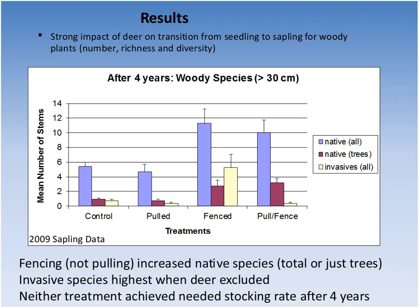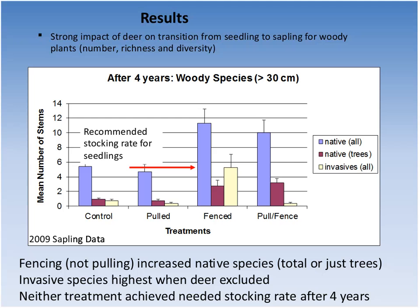There is a recommended pre-harvest stocking rate of about five saplings per plot needed for successful succession. After four years of deer exclusion and invasive removal, we did not reach that threshold for native species. However, fencing alone did produce enough invasive saplings to support succession — just not the succession we want. Fencing without invasive removal leads succession toward invasives rather than native species.